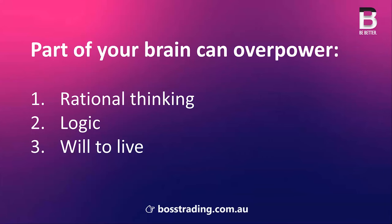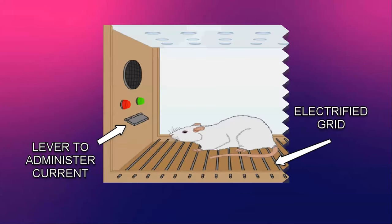Did you know there's a part of your brain that can overpower rational thinking, logic, and even the will to live? Psychologists James Olds and Peter Milner inserted an electrode into a region of a rat's brain, now referred to as the pleasure centre. The rat could self-administer an electrical current by pressing a lever. The sensation was so pleasurable that the rat endured the pain of running across an electrified grid just to get its charge. The rat ignored food and drink and kept pressing the lever until it died of exhaustion.